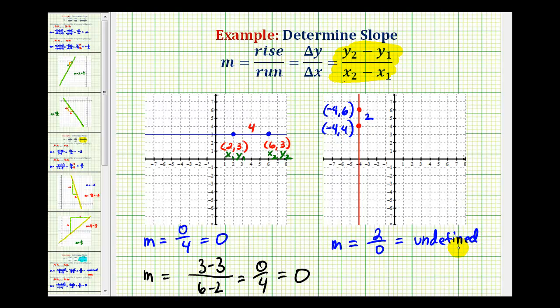Every vertical line has an undefined slope. Or, again, if we want to use the slope formula given two points on the line, we'll call these the 1's, and we'll call these the 2's.